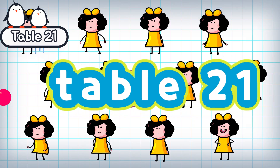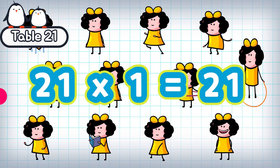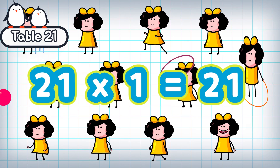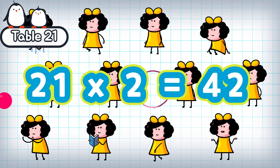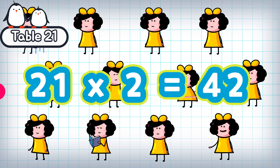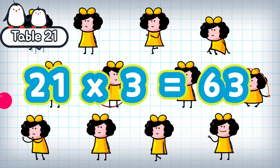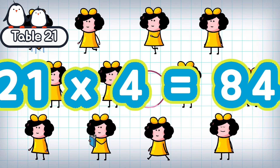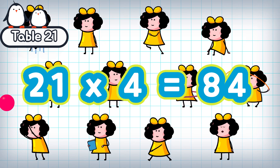Table 21. 21 times 1 is 21. 21 times 2 is 42. 21 times 3 is 63. 21 times 4 is 84.